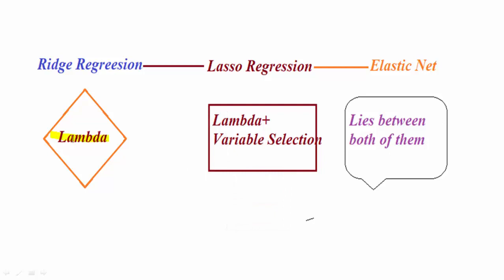This is the lambda and the lasso regression means it is just a ridge regression plus the property of variable selection. I just highlight the word variable selection. Again, if you want any model which lies between the ridge regression and the lasso regression, you should go for the elastic net which is having the combinations of both, ridge regression and lasso regression.